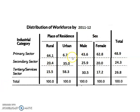In urban areas, agriculture is not a major source of employment. Only 6.7% are employed in the primary sector in urban areas, 35% in the secondary sector, and 58% in service sector activities. In the case of gender-wise distribution, both men and women are concentrated in primary sector activities — 43.6% and 62.8% respectively. Women's participation in the primary sector is particularly high at 62.8%.